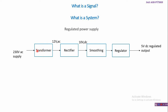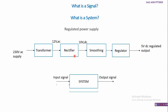So this transformer is a system which takes an input and gives out an output. Similarly, a rectifier can be viewed as a system which takes an input and gives out an output. All four components cascaded together form the whole regulated power supply system, which takes 230 volts AC as input and gives 5 volts DC regulated output.